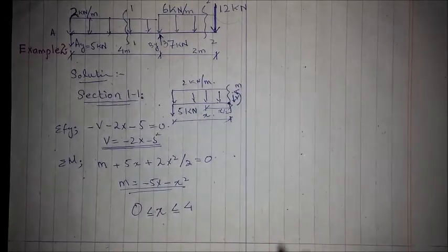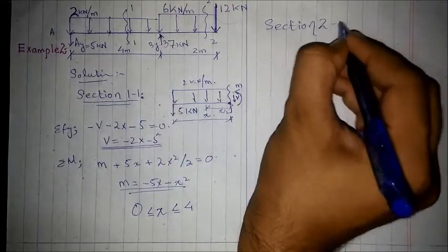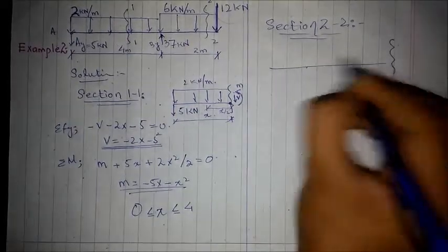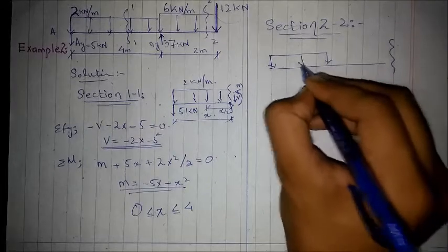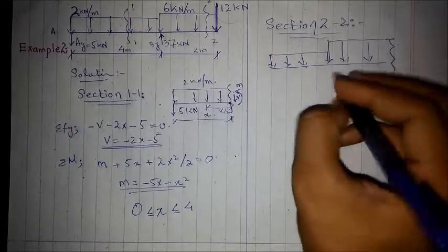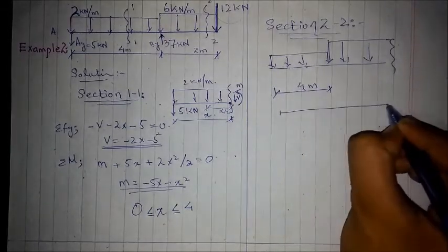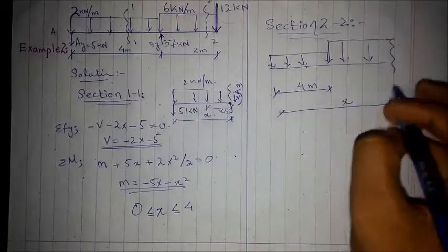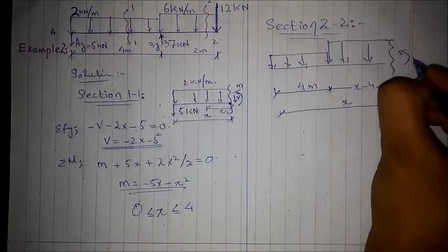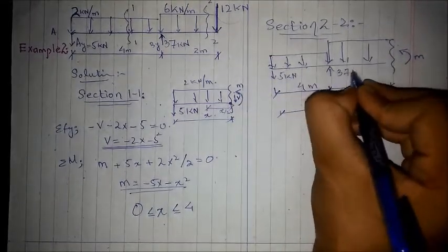For section 2 we need to find the bending moment and shear force. Using the free body diagram, the section covers the whole span — it is totally 4 meters and the distance is x, so we call the remaining part x minus 4 meters. Taking anticlockwise as positive, we have a 5 kN reaction here and a 37 kN reaction here.